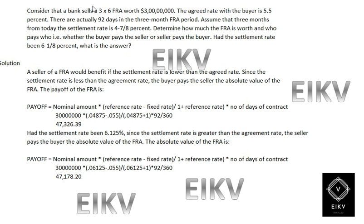Welcome to UKV, this is Vishnu. Consider this situation: a bank sells a 3×6 FRA worth 30 million. The agreed rate with the buyer is 5.5%. There are 92 days in the three-month FRA period. Assume that three months from today the settlement rate is 4 7/8 percent. Determine how much the FRA is worth and who pays whom — whether the buyer pays the seller or the seller pays the buyer.